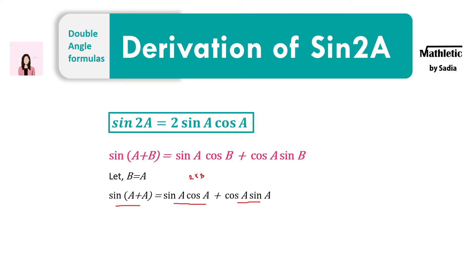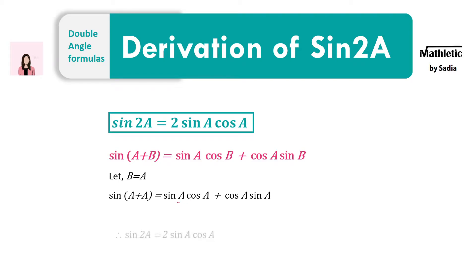For example, 2 into 3 is 6, and if you change the sequence, 3 into 2 is also 6. So sine a cos a and cos a sine a is just a change in position — they indicate the same thing. So we can add them up: sine 2a equals 1 plus 1, giving us 2 sine a cos a. So we are done with the derivation of sine 2a.